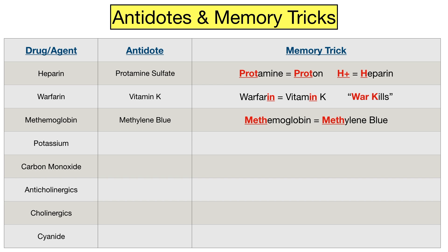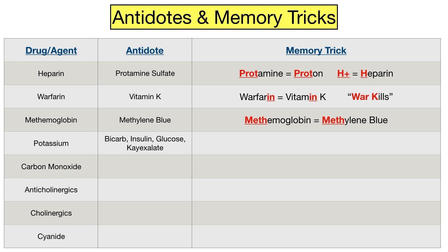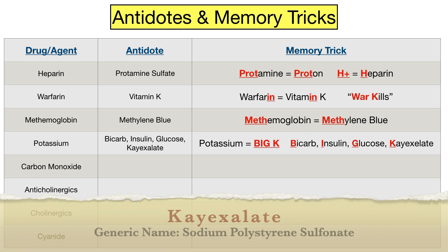Next we have potassium. Hit pause and try to name the treatment for hyperkalemia, or high potassium levels in the blood. Some treatment options include bicarbonate, insulin along with glucose, and K-exalate. There are other options as well including albuterol, and if there are characteristic EKG changes or arrhythmias present, then consideration should be given for calcium gluconate or chloride, which helps stabilize the cardiac cell membrane. The trick I came up with is BIG K — the symbol for potassium on the periodic table is a capital K. This will help you remember B for bicarb, I for insulin, G for glucose, and K for K-exalate.